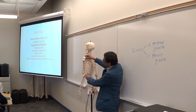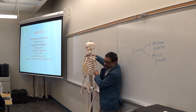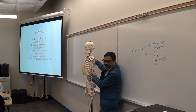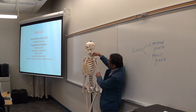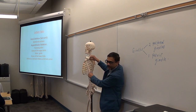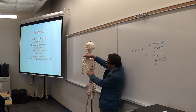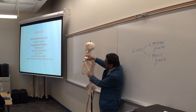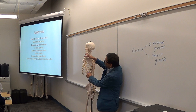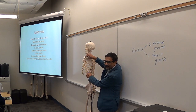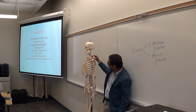For upper extremities, you have two pectoral girdles. For lower extremities, you have only one pelvic girdle. This is one pectoral girdle and this is the other pectoral girdle. The pectoral girdle is formed by two bones: the clavicle in the front and the scapula in the back. These two bones join at the acromioclavicular joint. This is the acromion of the scapula, and this is the clavicle — that's why it's called the acromioclavicular joint.